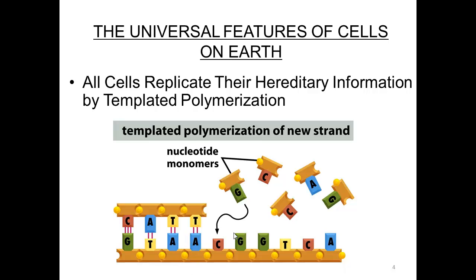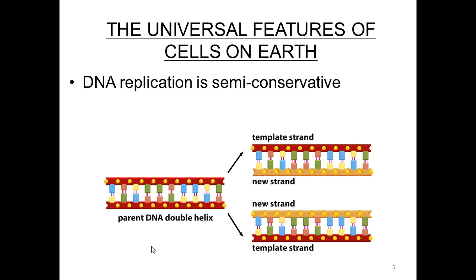The information is passed on by cells through synthesis of new strands of DNA, using the original strand as a template for guiding the incorporation of new nucleotides into a growing strand. C's and G's always base pair with each other, and A's and T's always base pair with each other. DNA replication is semi-conservative — each of the new daughter strands gets one of the original parent strands, and each new copy of the DNA has one newly synthesized strand.